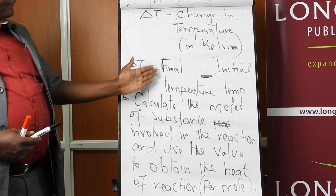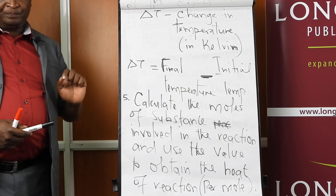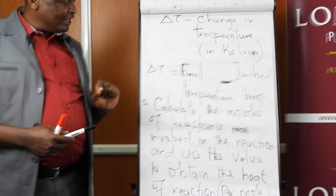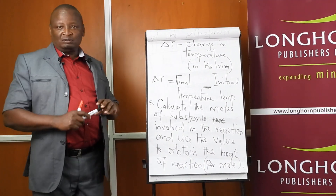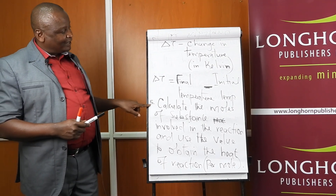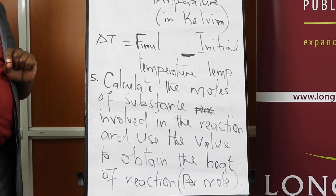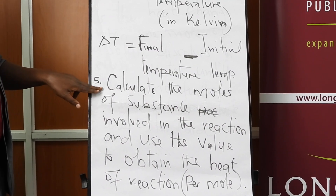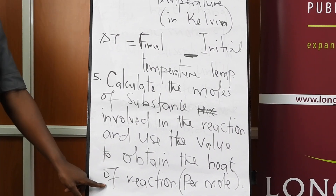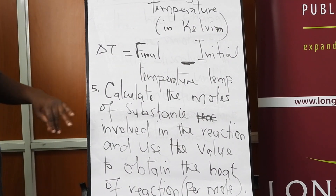After getting delta H, remember that a standard enthalpy change involves the amount of energy released when one mole of the substance is reacting. So it is important to know how many moles of the substance were reacting, and thereafter use those moles to calculate how much energy would be produced if one mole was involved — and that is what we call the standard enthalpy change.